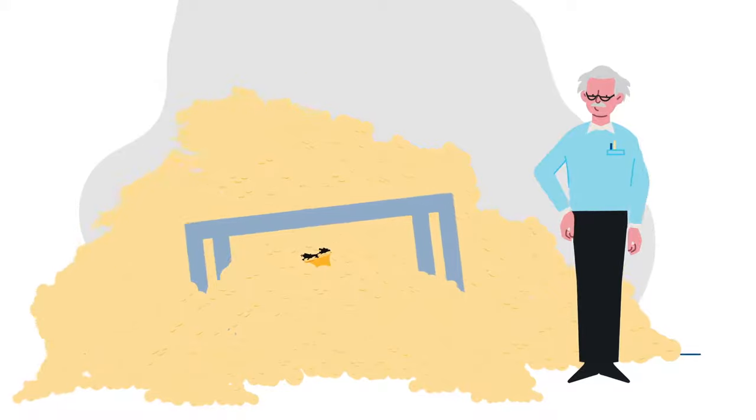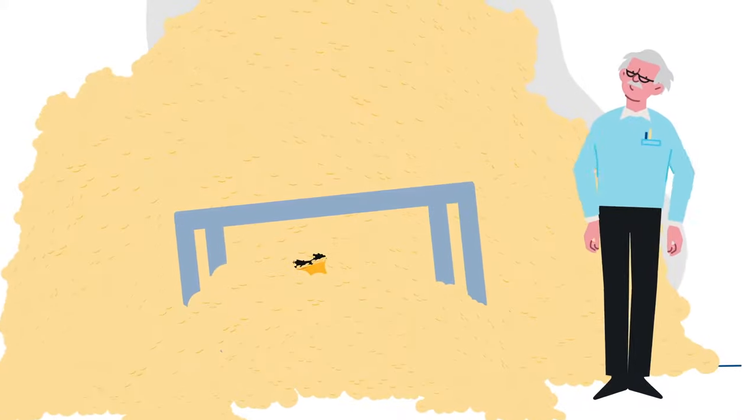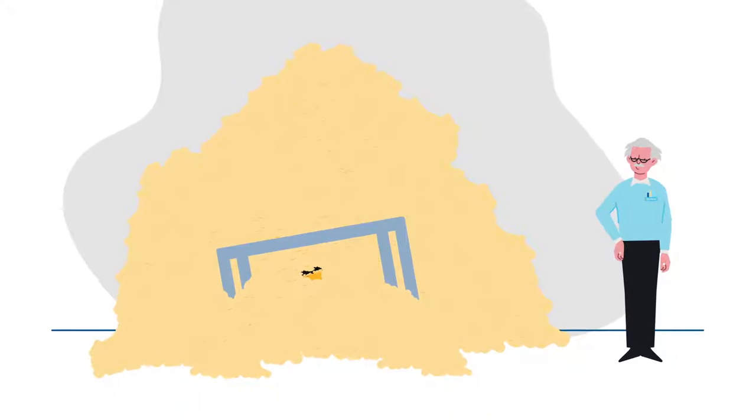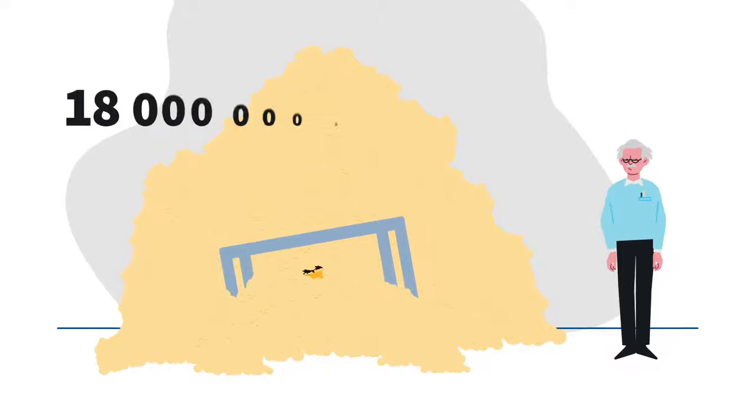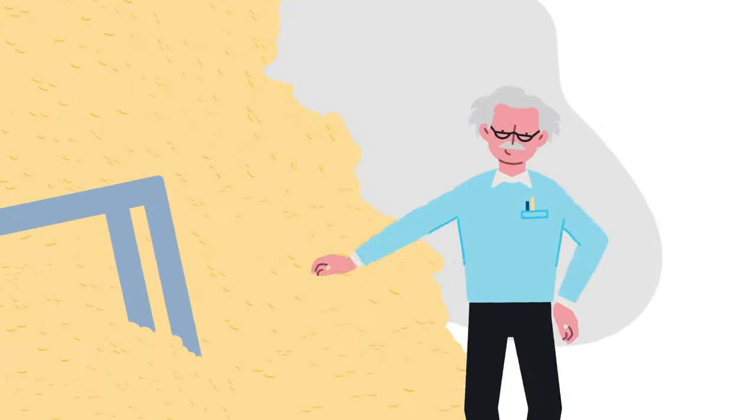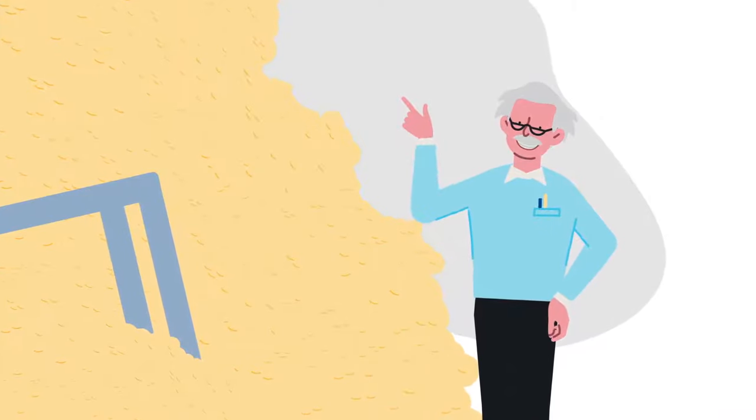Now, a chessboard has 64 squares in total. How much rice do you think there will be by the last square? Fact is, on the last square alone, the number will be around 18 quintillion. All that growth from a single grain of rice. No wonder Einstein thought compounding was something close to magic.